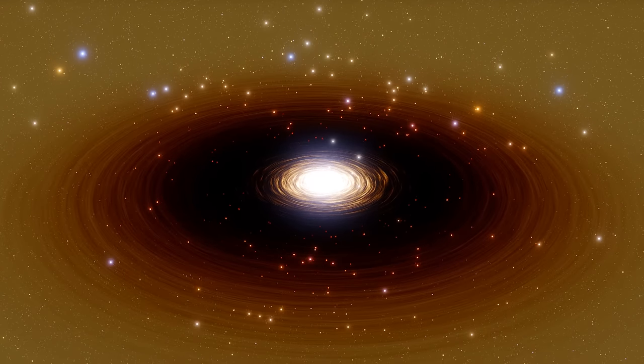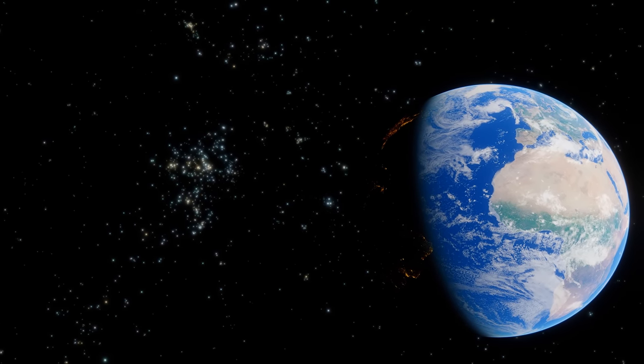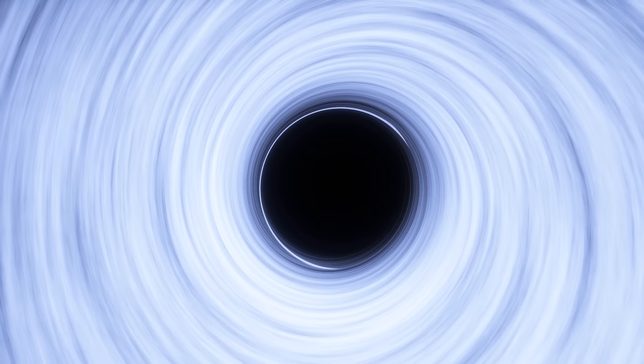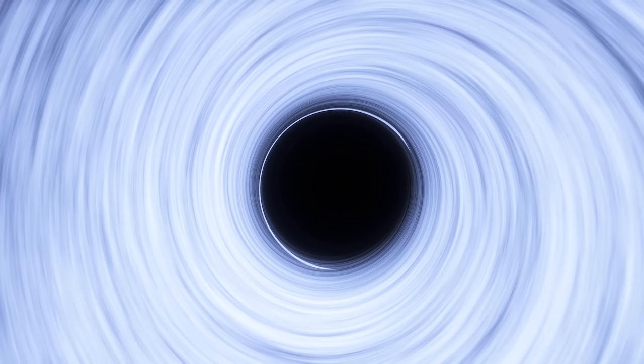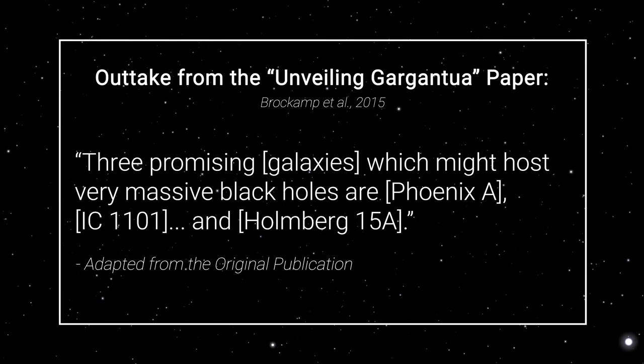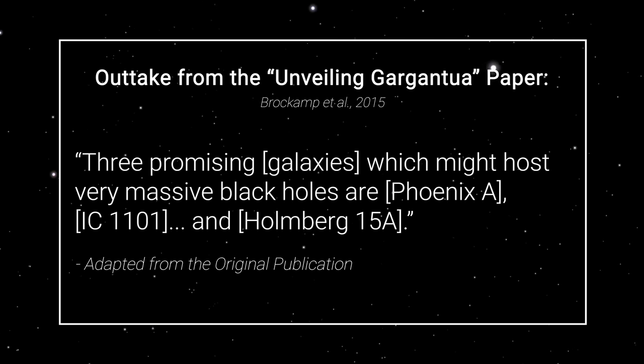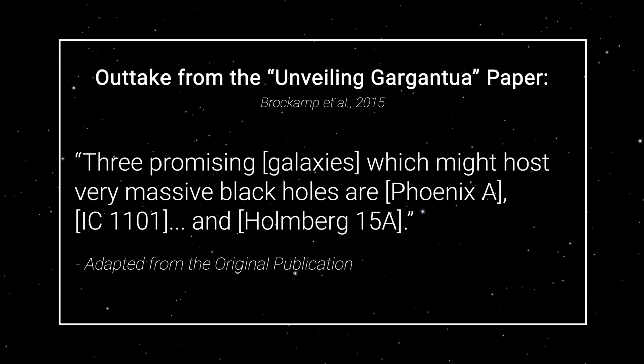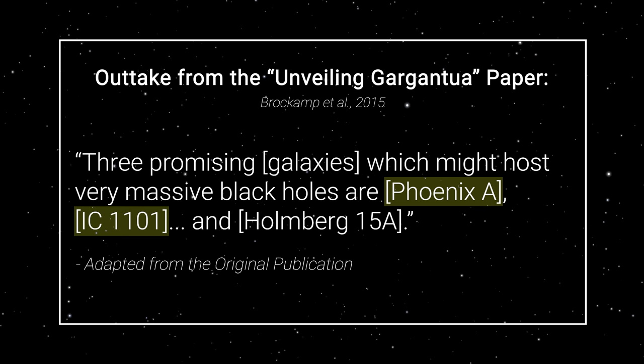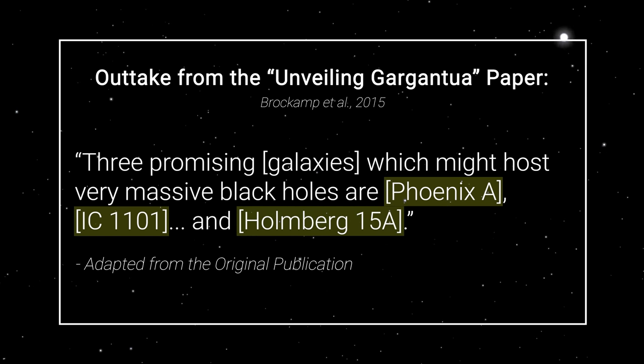Such a beast of a black hole would present a serious challenge to what we thought was possible. However, one has to examine the context of this estimate before getting carried away, as it is not based on any direct measurement of Phoenix A's dynamics. In fact, this paper gave the same ballpark estimate of 100 billion solar masses to no less than three central cluster black holes- not just to Phoenix A star, but to IC1101 star, and the black hole at the heart of another BCG, Holmberg 15A.